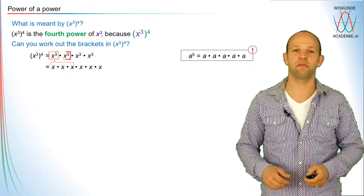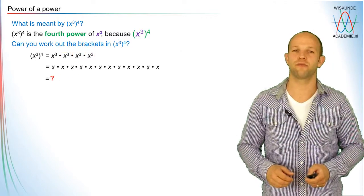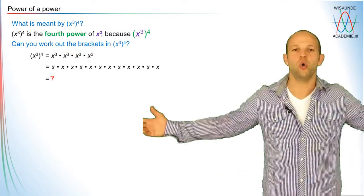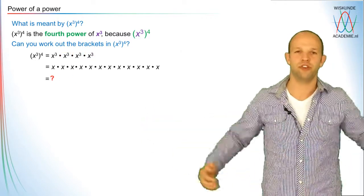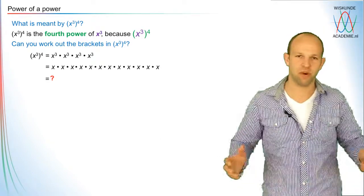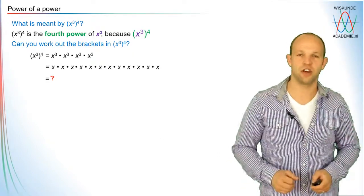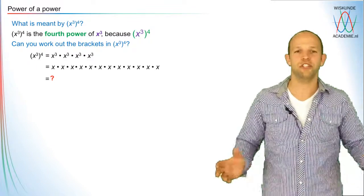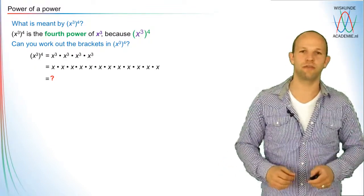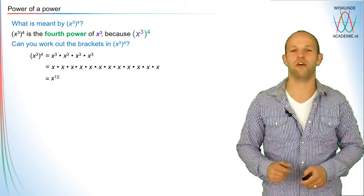The same expansion can be done for the other three parts of course. Now we have a whole big bunch of x's multiplied with one another — a repetitive multiplication of x's. There are 12 of them in total, so this can be simplified and written as x to the power 12.